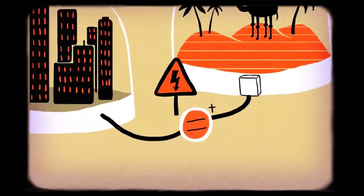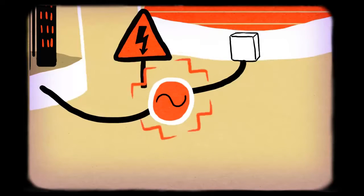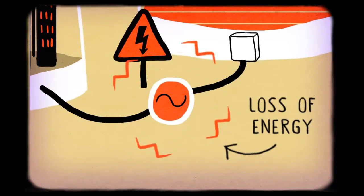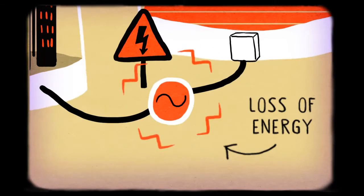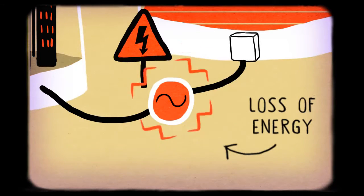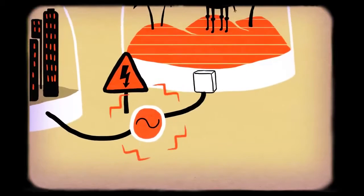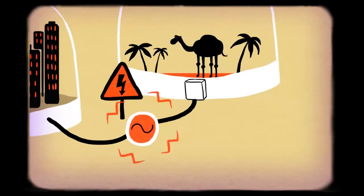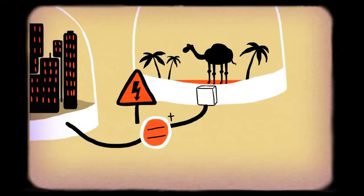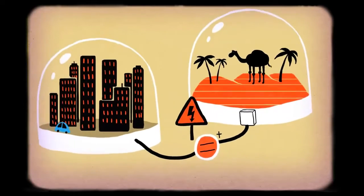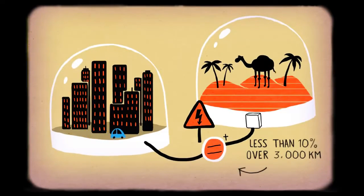Normally our electricity network is AC, alternating current. This AC current has a lot of losses. One reason is because you produce electrosmog. You broadcast electromagnetic waves and there you lose energy. If you use DC you don't have that anymore. And the power losses are less than 10% over 3,000 kilometers.